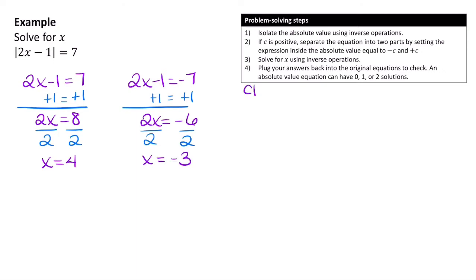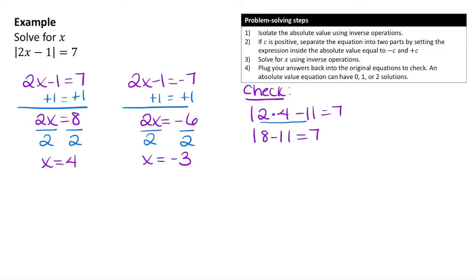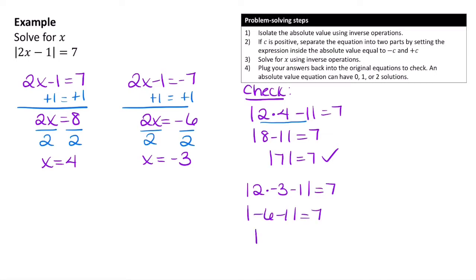Now I need to check both solutions in the original equation. Plugging in x = 4: |2(4) minus 1| = |8 minus 1| = |7| = 7. That's true. Checking x = negative 3: |2(negative 3) minus 1| = |negative 6 minus 1| = |negative 7| = 7. That's also true. So both solutions are valid: x = 4 and x = negative 3.